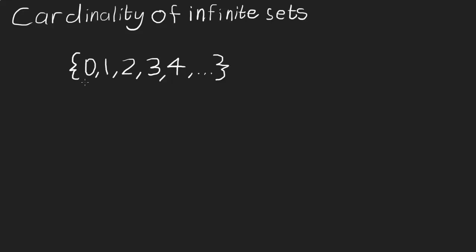The natural numbers are the numbers starting from 0 and going up in increments of 1. So the numbers 0, 1, 2, 3, 4, 5, 6, 7, 8, 9, 10, 11, 12, and so on infinitely.